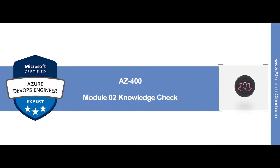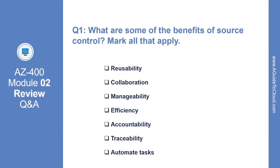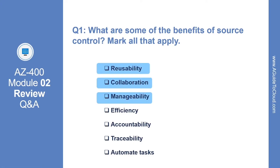In this section we are going to go through AZ-400 Module 2 review questions and answers. Question number 1: what are some of the benefits of source control? Select all. Except accountability, all of the other options mentioned here are benefits of source control: reusability, collaboration, manageability, efficiency, traceability, and automated tasks.